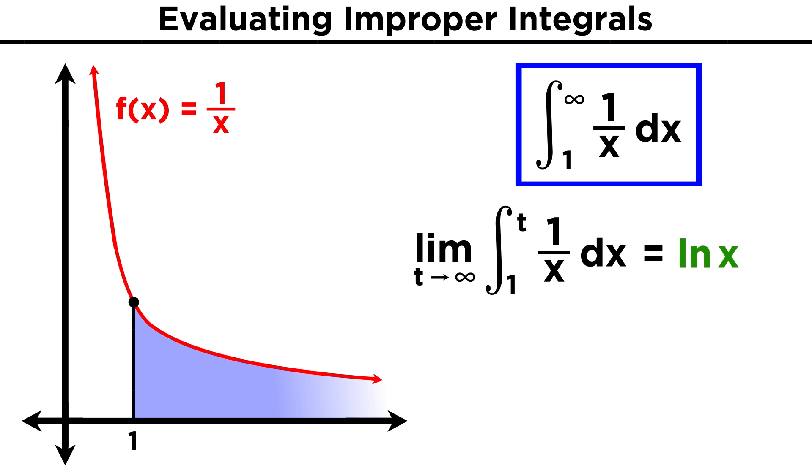The integral of one over x is the natural log of x, so when we evaluate, we get the natural log of t minus the natural log of one. The natural log of one, or any log of one, must be zero because anything to the zero power gives us one. So that term goes away, leaving us with the natural log of t. As t gets larger, this term gets larger, and it does so without bound, all the way to infinity. So this one didn't work out as nicely as the first one, and this integral is indeed divergent, even though the two functions look fairly similar.